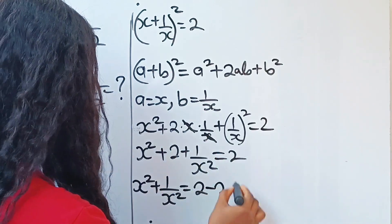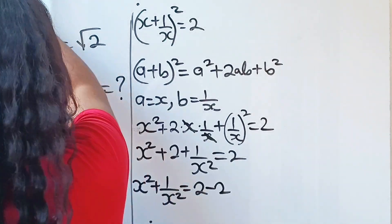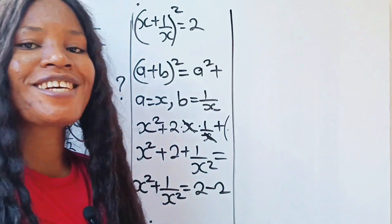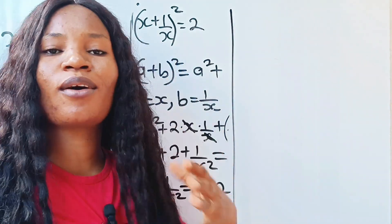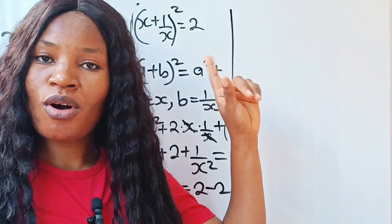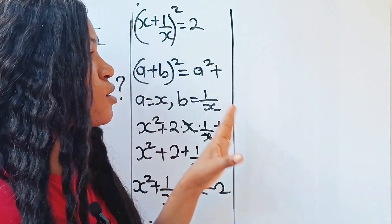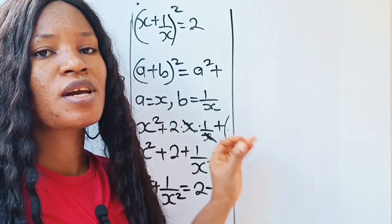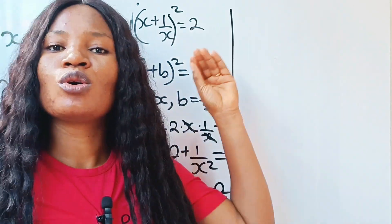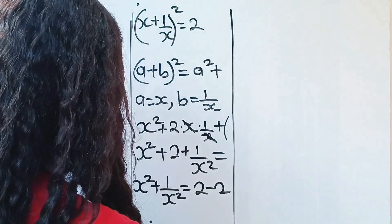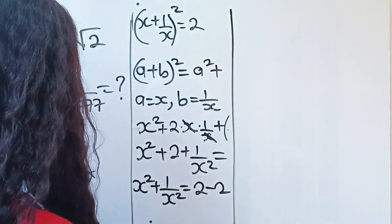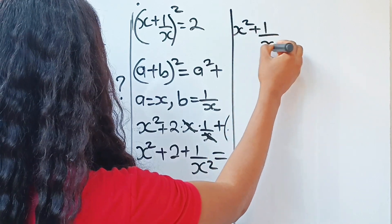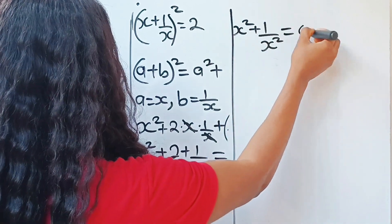Transferring the +2 to the right-hand side, it becomes minus 2, so 2 minus 2 gives us zero. After cleaning the board, what we have is x squared plus 1 over x squared is equal to 0.